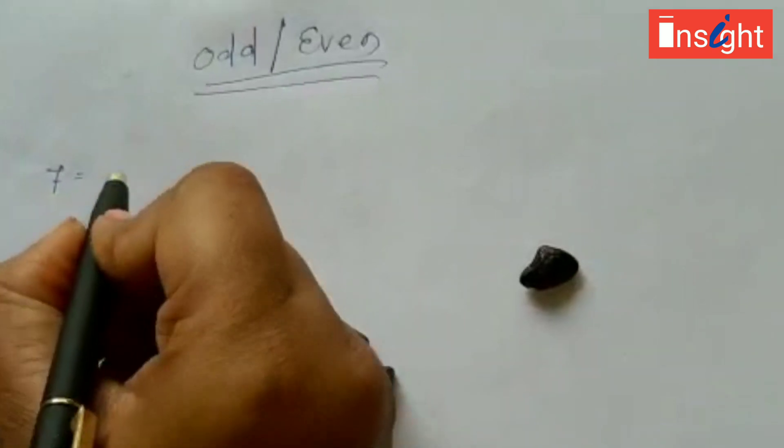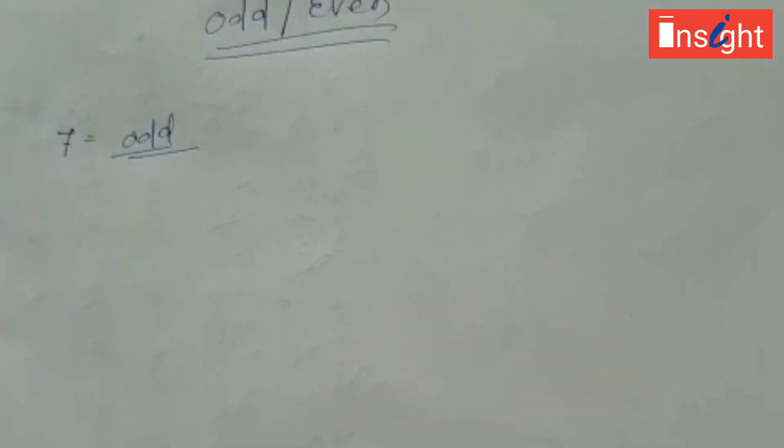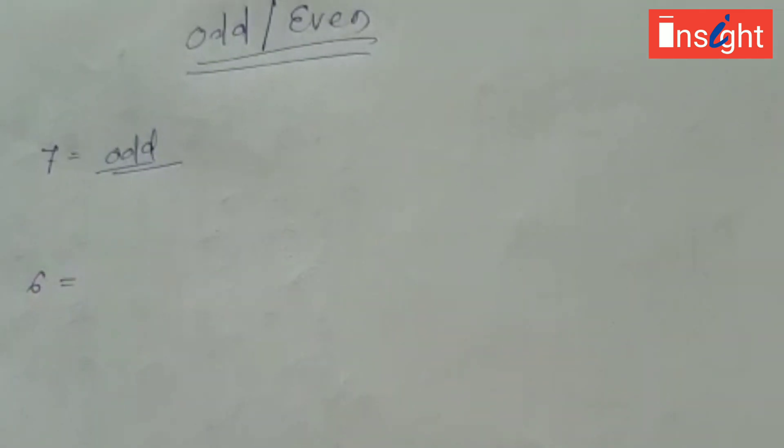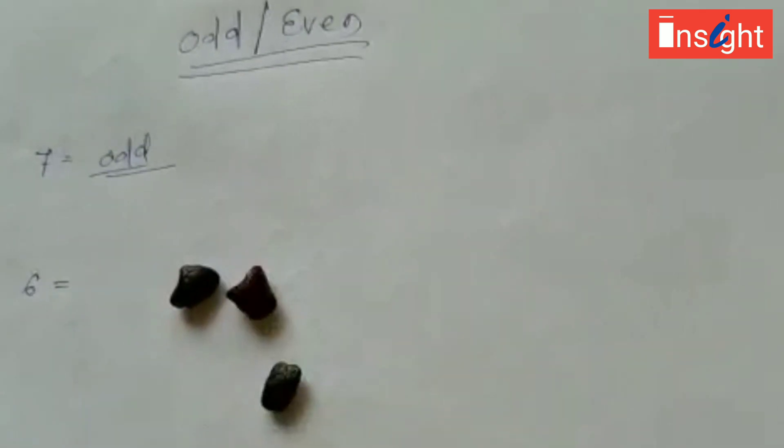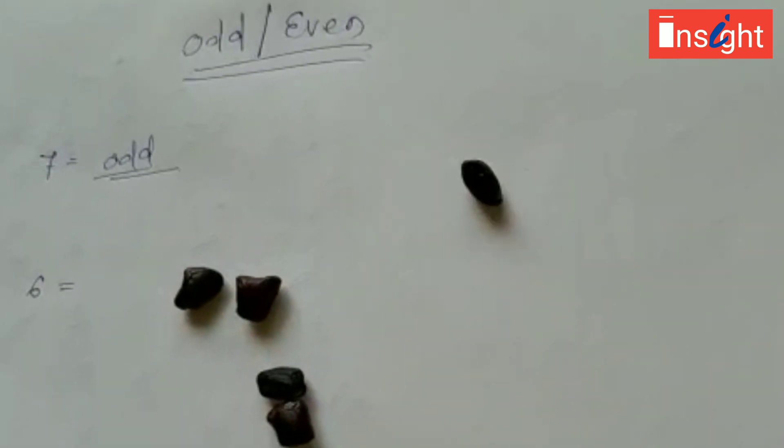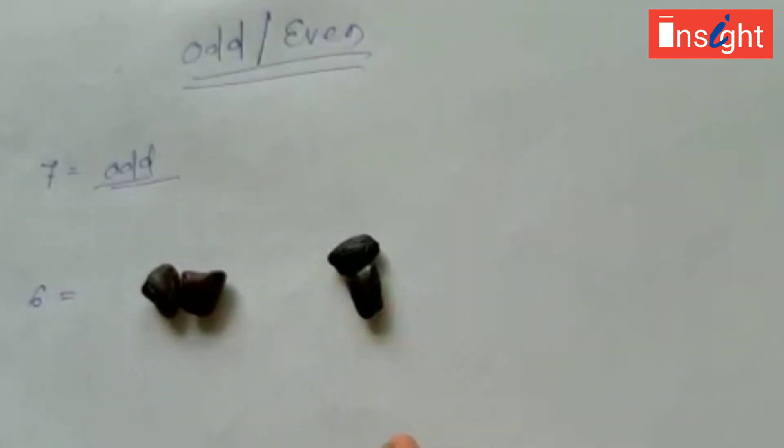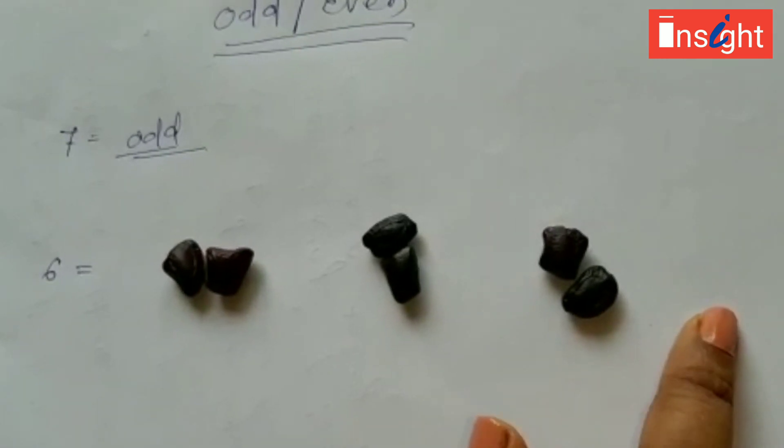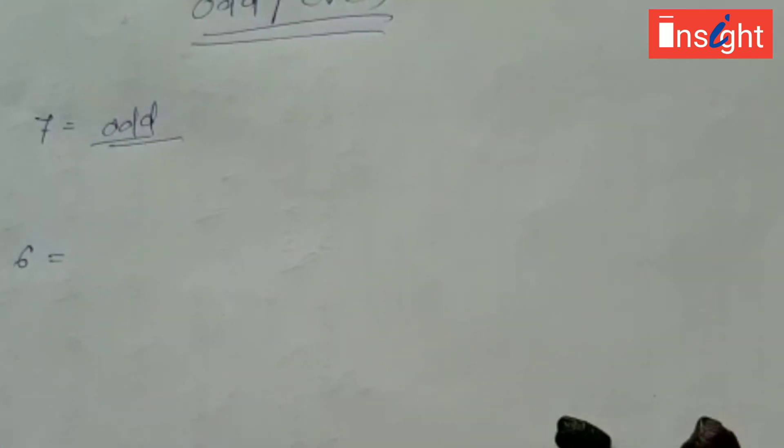Now again start with another number. I am taking six here. Now take six numbers of seeds: one, two, three, four, five, and six. Make it pair of two. See, there is no single seed left. All are in pair of two. That means it will be even number.